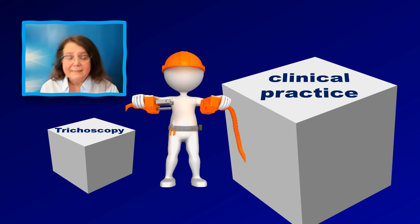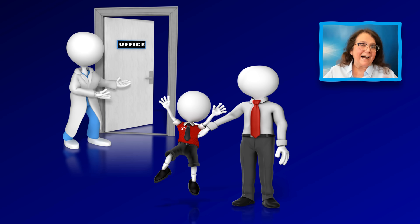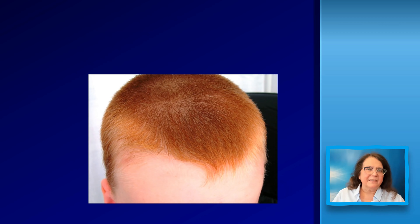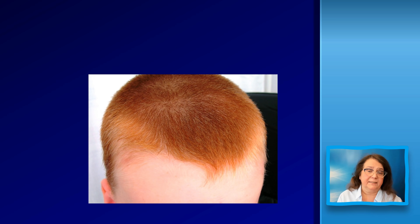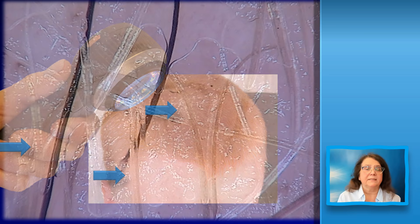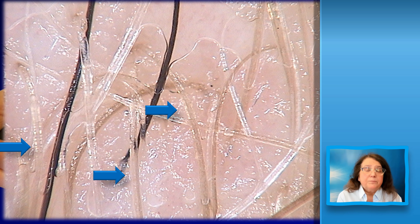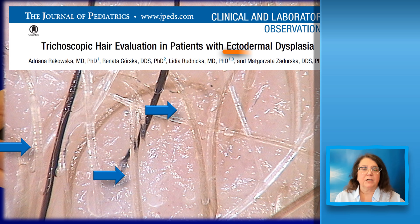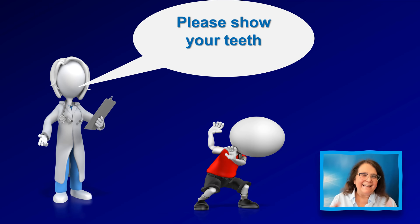How can we combine trichoscopy with clinical practice, and how does it work in real life? Here is a five-year-old boy who had areas of sparse, thin hair since infancy. We performed trichoscopy and were surprised to see multiple gray hairs. We would not be surprised to see gray hair in a person who is 50 or 60, but gray hair among normally pigmented hair in a five-year-old boy was quite unusual. This brought to mind the possibility of ectodermal dysplasia.